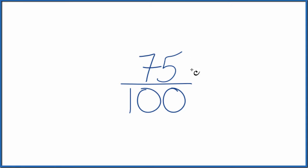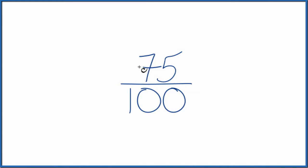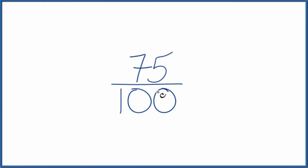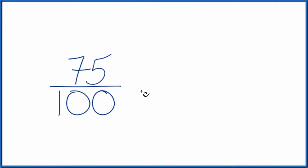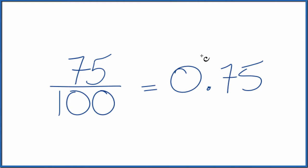Let's write the fraction 75 over 100 as a decimal. There are a few ways we can do this. First, you could just divide 75 by 100 on your calculator, or you could divide 75 by 100 longhand. You end up with 0.75. So the fraction 75 over 100 equals the decimal 0.75. These are equivalent — they have the same value, just represented differently.